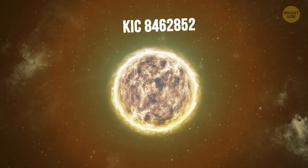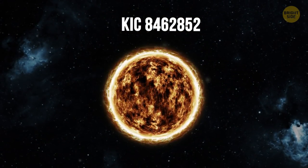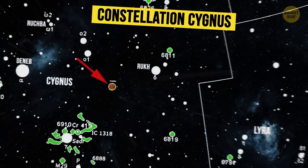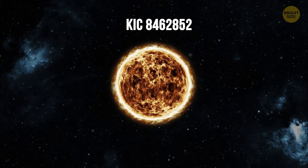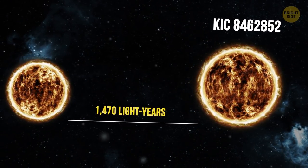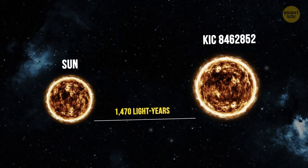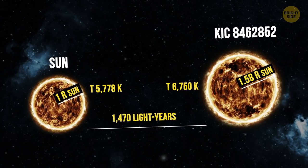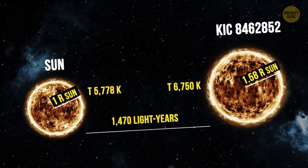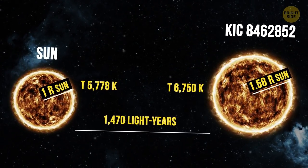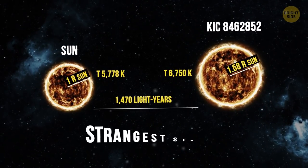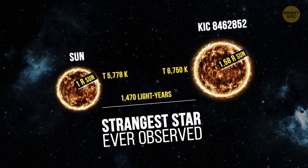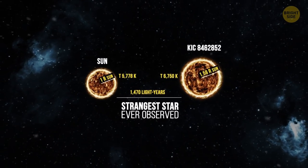KIC 8462852, or simply called Tabby star, is a mysterious celestial object situated in the constellation Cygnus, some 1,470 light-years away from the Sun. Nothing about this star is particularly exceptional. It's about 50% bigger than our Sun and 1,000 degrees hotter, and there are other objects just like it in the universe. Nevertheless, it became known as the strangest star ever observed. To understand why, we should dive a bit deeper into how it was first found.